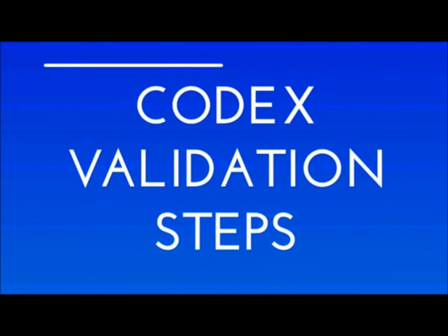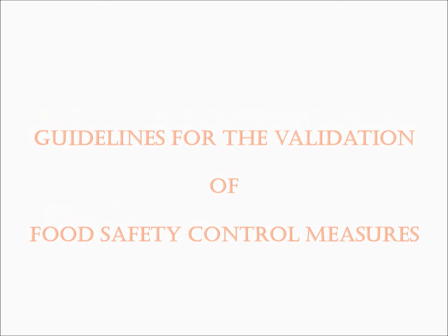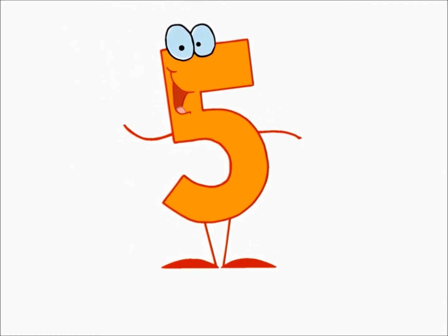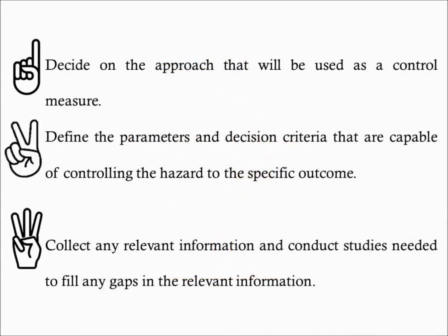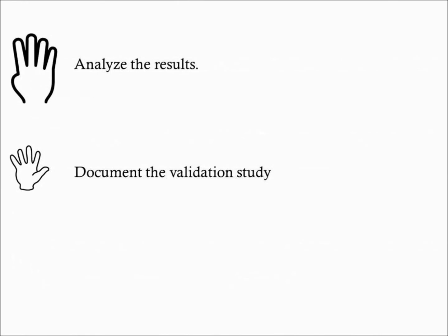In 2008, Codex Alimentarius published the Standard Guidelines for the Validation of Food Safety Control Measures, which can be applied to many existing control measures, as it incorporates a five-step process. The five steps are: 1. Decide on the approach that will be used as a control measure. 2. Define the parameters and decision criteria capable of controlling the hazard to the specific outcome. 3. Collect any relevant information and conduct studies needed to fill any gaps. 4. Analyze the results. 5. Document the validation study.